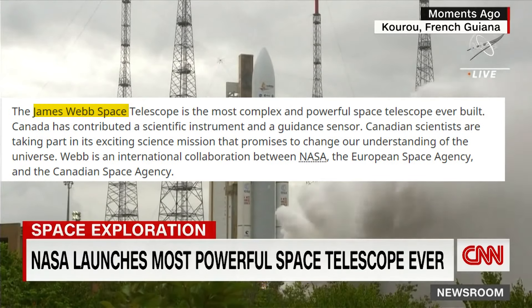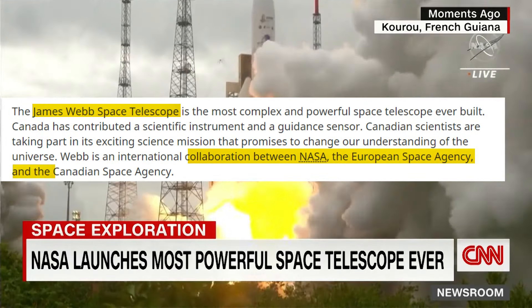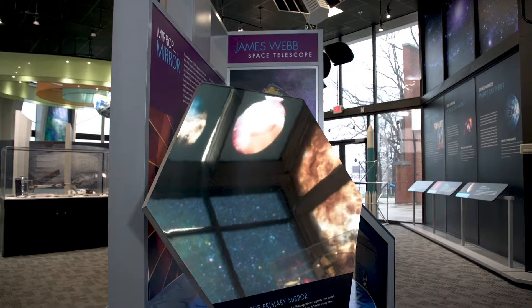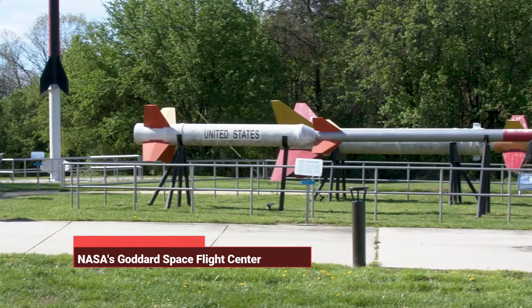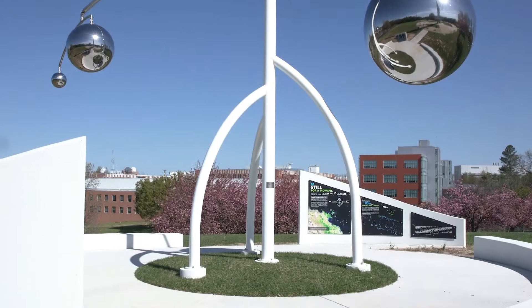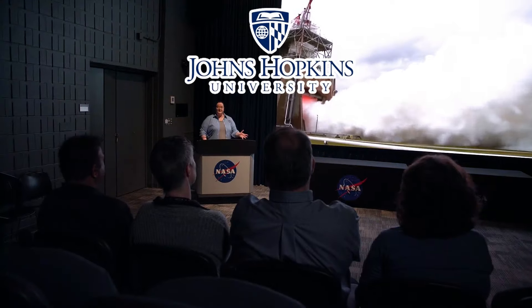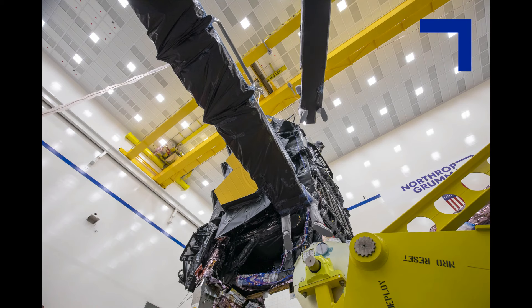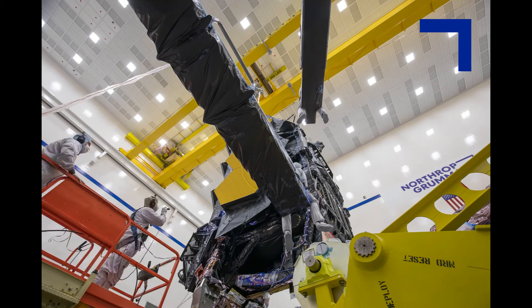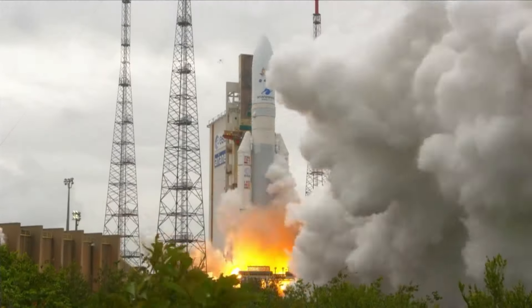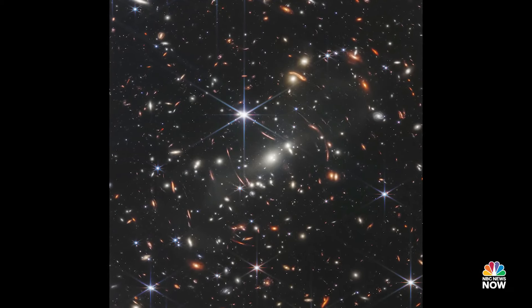While media reports often attribute the development solely to NASA, it's crucial to recognize the contributions of other partners, collaborative efforts involving NASA, the European Space Agency, and the Canadian Space Agency. Managed by NASA's Goddard Space Flight Center in Maryland, the telescope's operations are overseen by the Space Telescope Science Institute at Johns Hopkins University in Baltimore. The primary contractor, Northrop Grumman Corporation, played a key role in bringing the JWST project to fruition. Launched on an Ariane 5 rocket from French Guiana in January 2022, the telescope reached its Sun-Earth Lagrange point destination. Six months later, the first Webb image was released, marking a significant milestone.